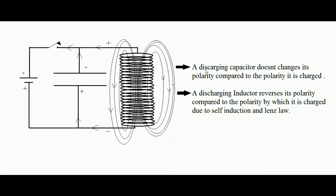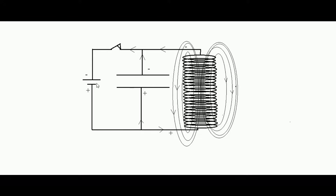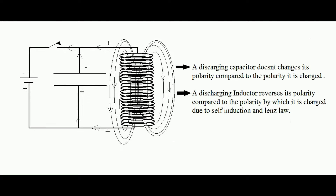During charging, the positive end of the battery was connected to one plate and the negative to the other. When the capacitor discharges, its polarity remains the same. However, when the inductor was building its magnetic field, one end was positive and the other negative.